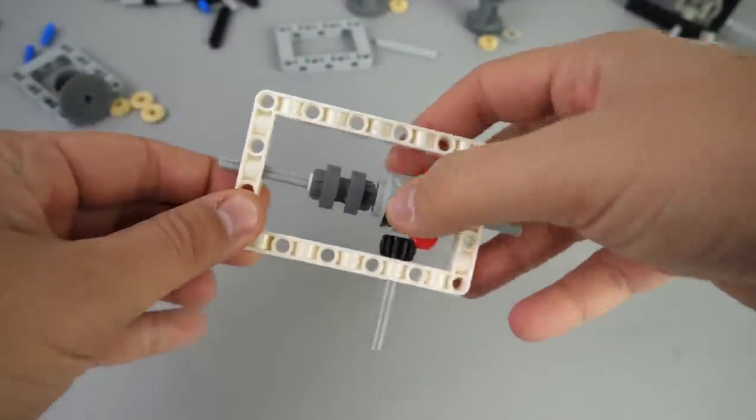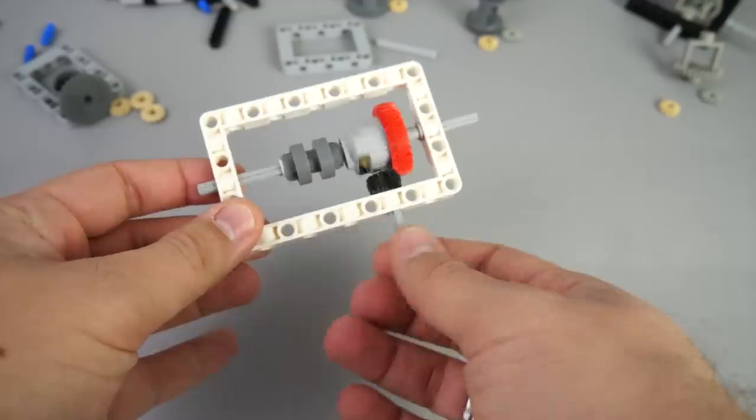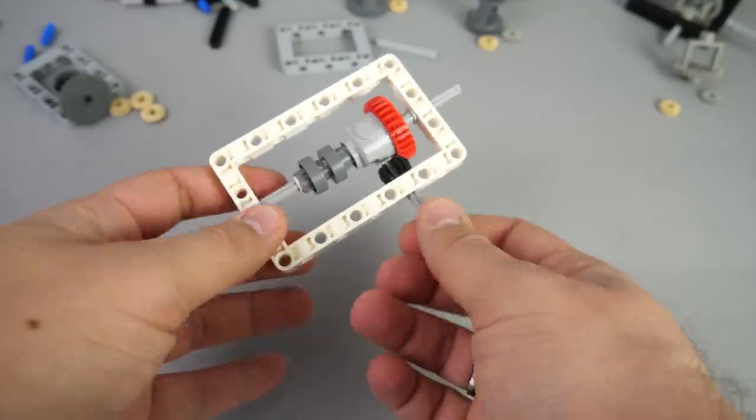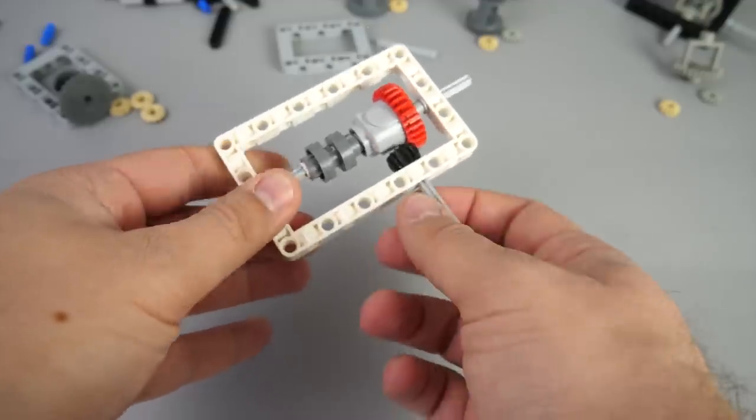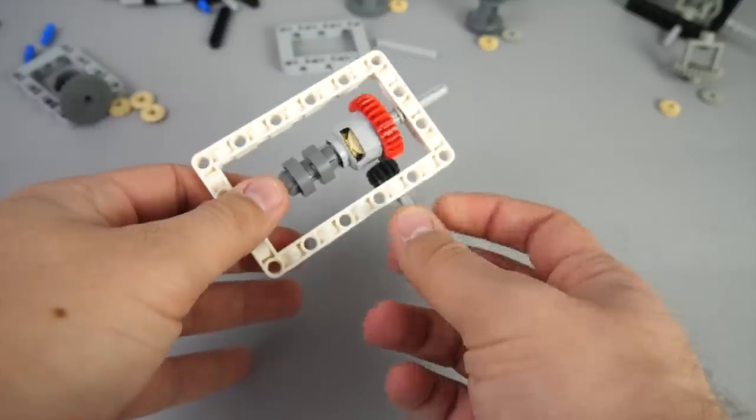This new differential can be also connected to the driving rings, so it is possible to lock the differential. Here is a very simple setup. It is obviously very weak, but it can show you the possibilities.